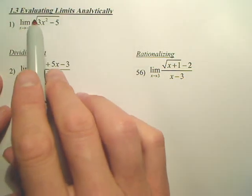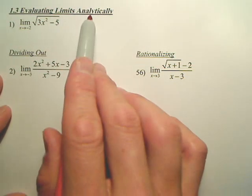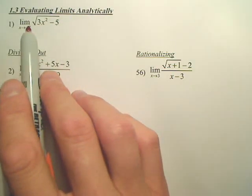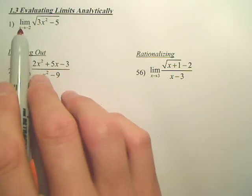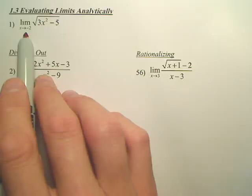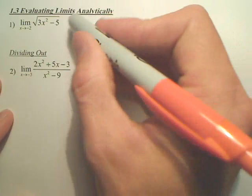All right. Evaluating limits analytically. Basically, the first way you do any kind of limit analytically is plug in the number. Negative 2. Always, that's the first thing. So, let's plug in negative 2.